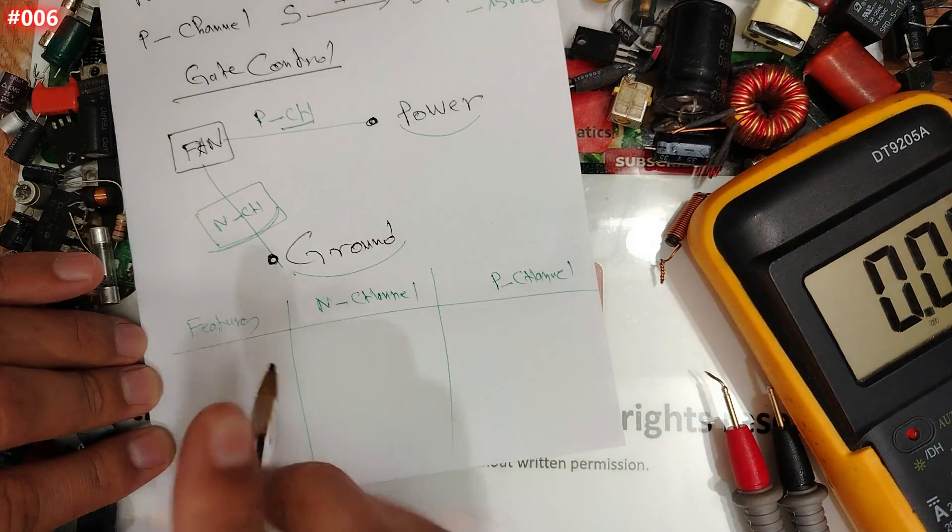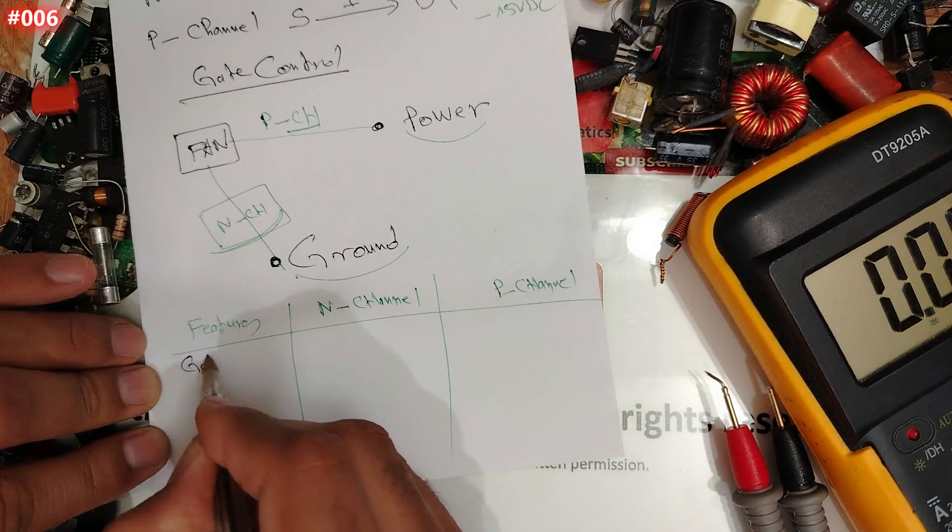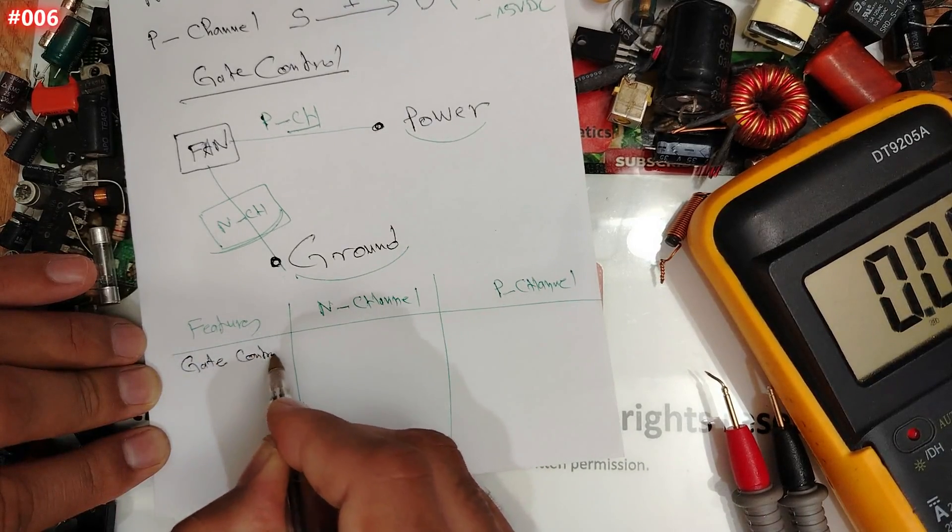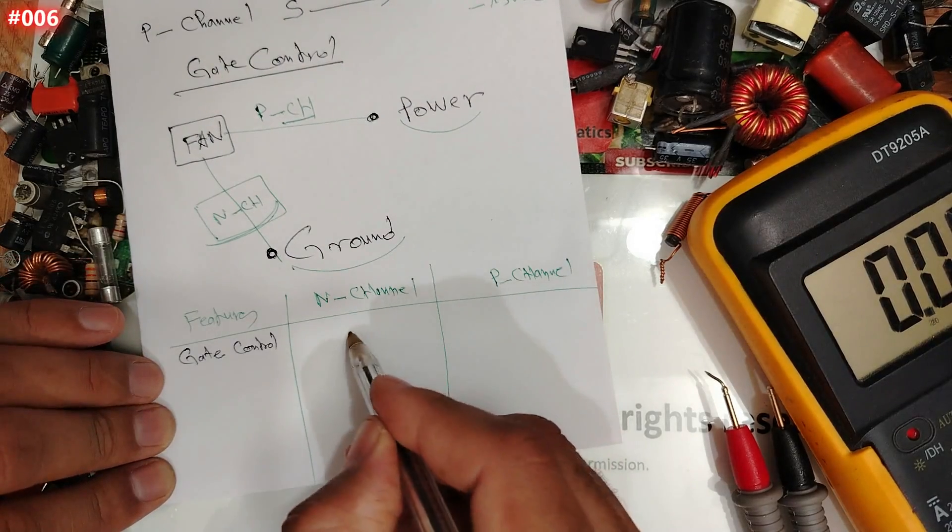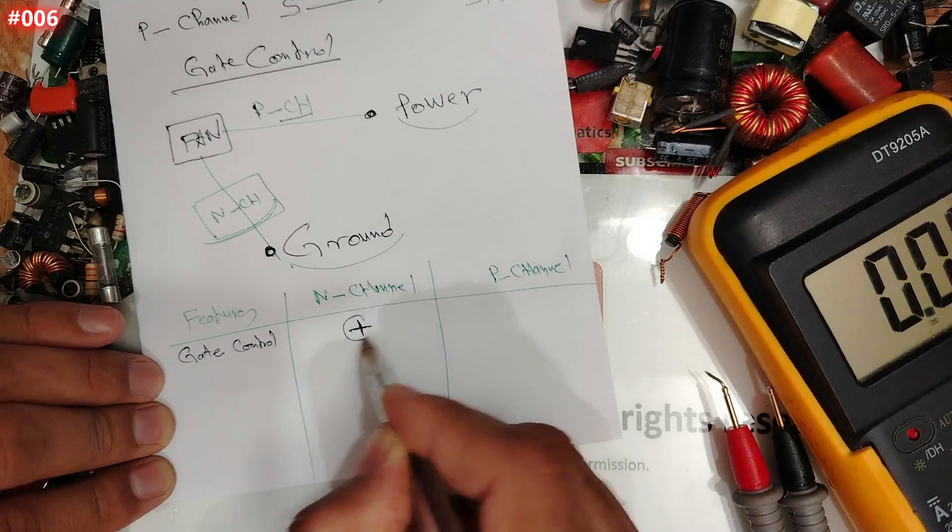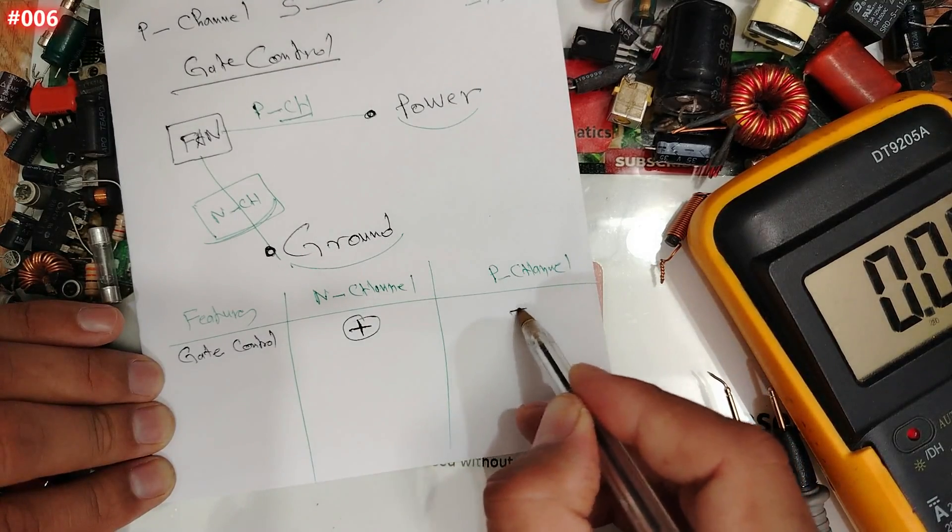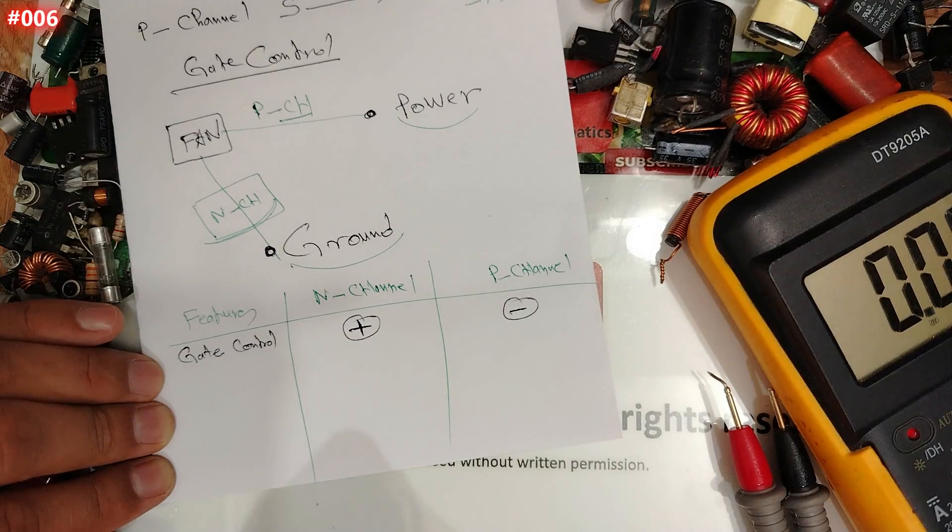So guys, for the gate control, for the gate control, this is a summary for beginners. For N-channel, we need positive voltage. For P-channel, we need negative voltage to be activated.